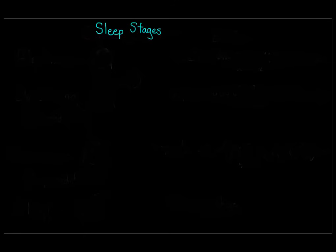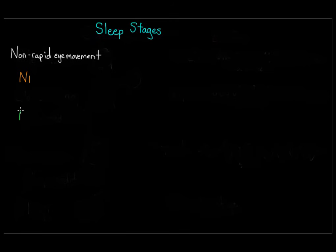These four stages occur in approximately 90-minute cycles during a normal night of sleep. The first three stages are all considered non-rapid eye movement, or non-REM, which I'm going to abbreviate as N1, N2, and N3.